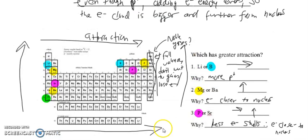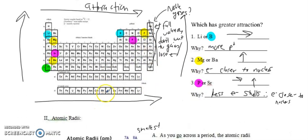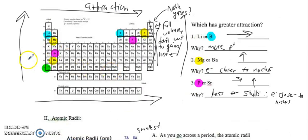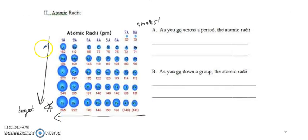That is exactly opposite of the attraction example, and that should make some good sense to you. If there's a high attraction between the electron cloud and the protons, the nucleus is going to pull in that electron cloud like it's getting a big hug and shrink it close to the nucleus. With low attraction, there is room for the electron cloud to kind of spread out. As I go down each energy level — principal quantum numbers 1 through 7 — I am adding a new energy level. Think back to the Bohr model: I've got to add another ring. Each time I add another ring, the electrons are getting further and further away from the nucleus.